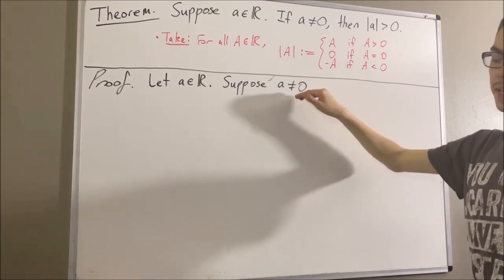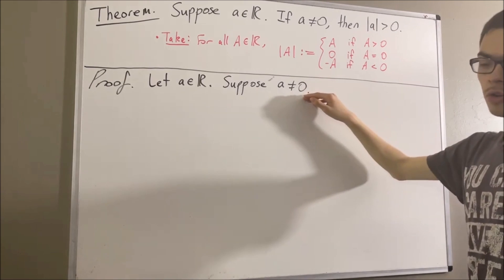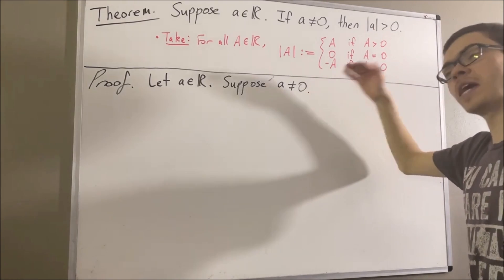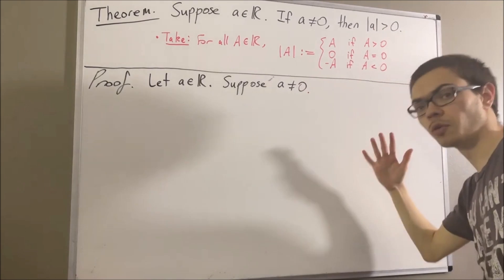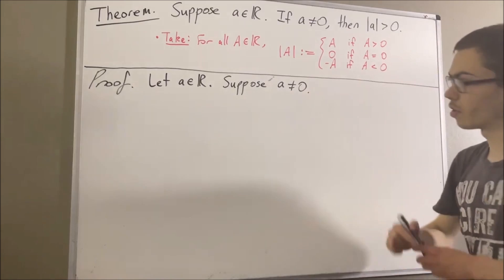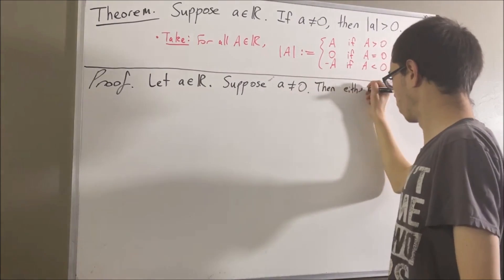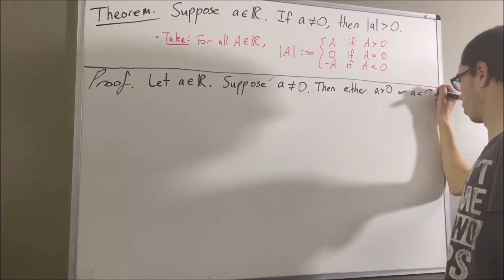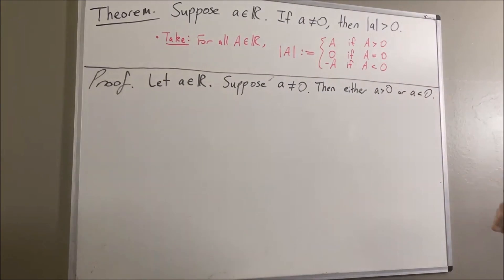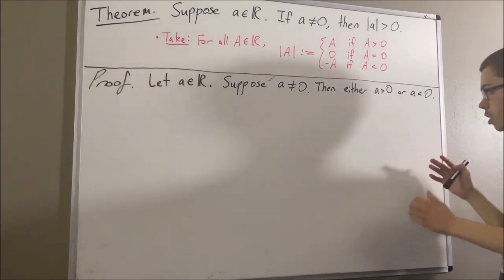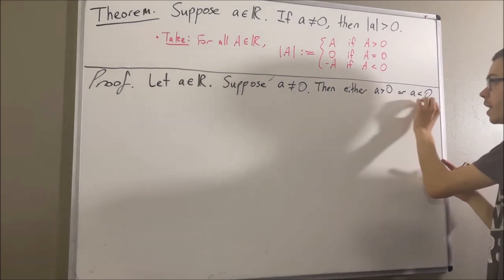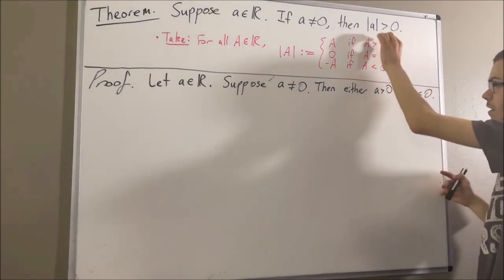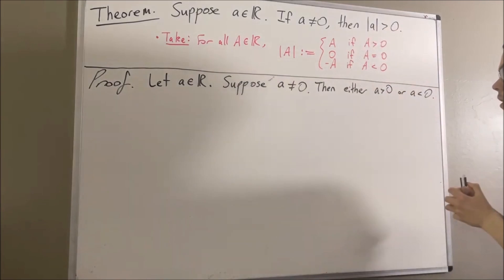Our whole goal is to deduce that the absolute value of A is greater than zero. Since A is not equal to zero, we know that either A is greater than zero or A is less than zero. So what we're going to do is prove that in either case, the absolute value of A is greater than zero.